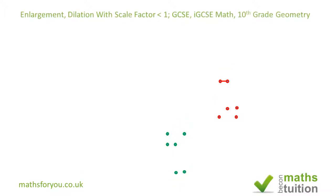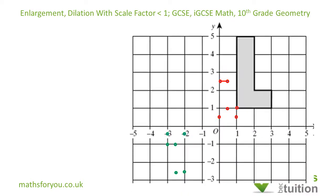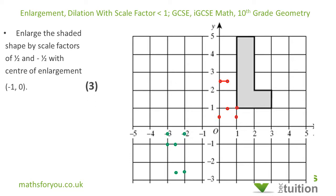Hello and welcome to this exercise on enlargement, sometimes referred to as dilation. We're looking at scale factors — this is lesson one. This is a GCSE high tier question, suitable for 11th grade geometry. The question says: enlarge the shaded L-shaped object by scale factors of one half and minus one half, with the center of enlargement at the point minus 1, 0. The three marks indicate the marks allocated to this question.